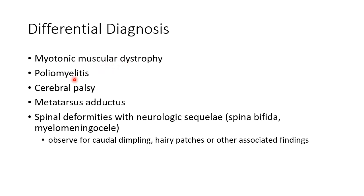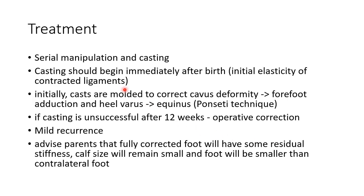The differential diagnoses of club foot include myotonic muscular dystrophy, poliomyelitis, cerebral palsy, metatarsus adductus, and spinal deformities with neurological sequelae. Examples of spinal deformities with neurological sequelae include spina bifida and myelomeningocele. These can be ruled out by observing for caudal dimpling, hairy patches, or other associated findings.